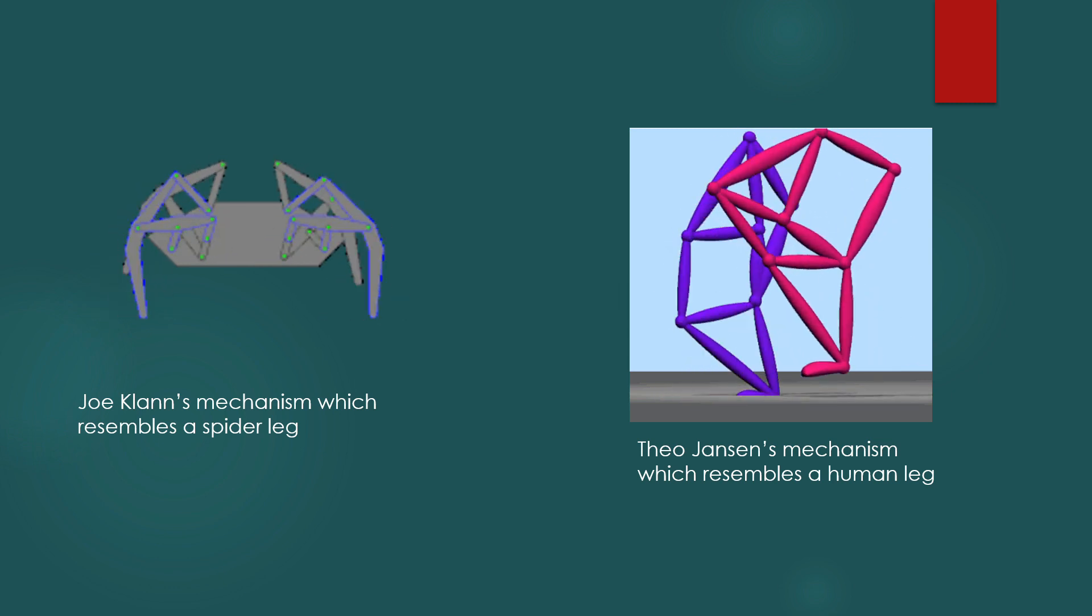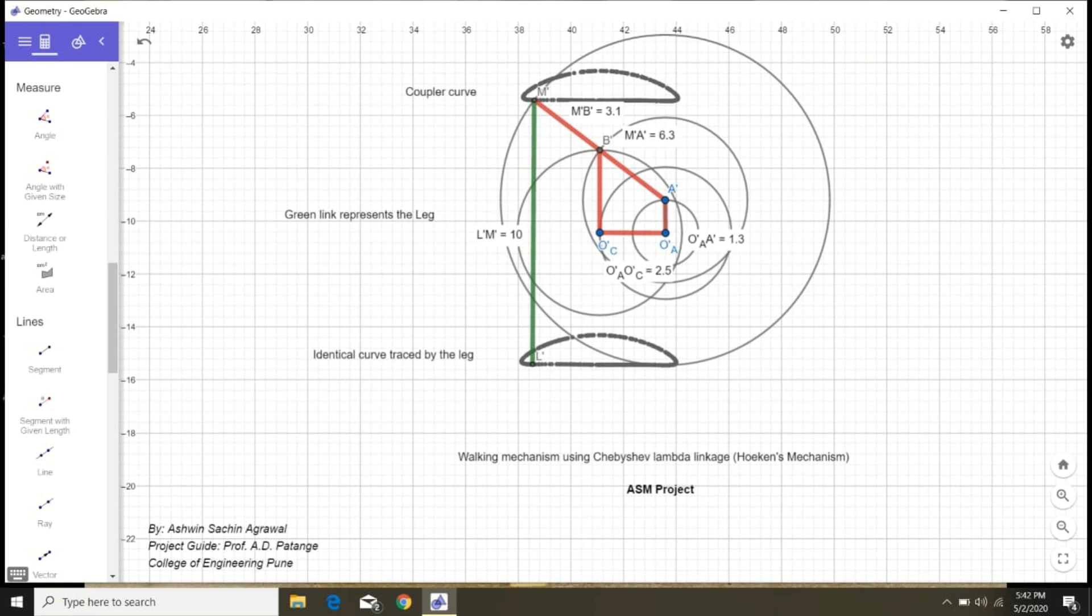The paper aims at deriving a walking mechanism from a four-bar linkage. For this purpose, a cognate of Chebyshev four-bar mechanism also known as Hoecken's mechanism or Chebyshev lambda mechanism has been used.